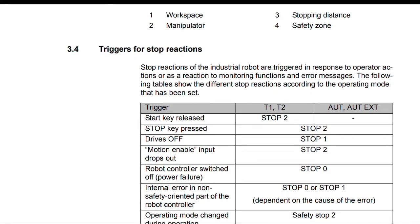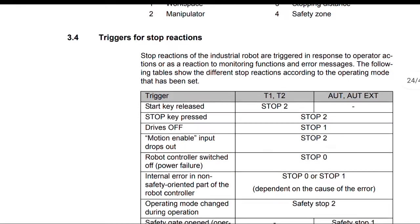Triggered for Stop Reactions: Stop reactions of the industrial robot are triggered in response to operator actions or as a reaction to monitoring functions and error messages. The following tables show the different stop reactions according to the operational mode that has been set.